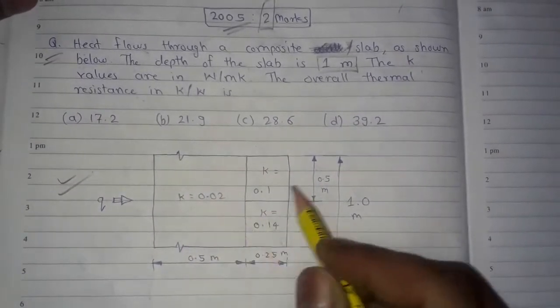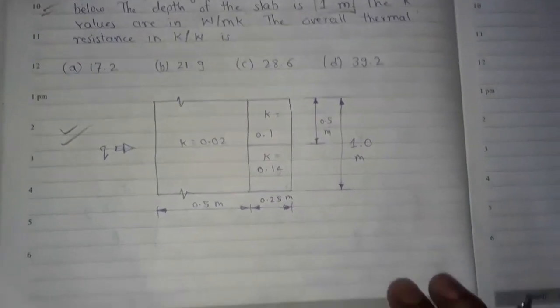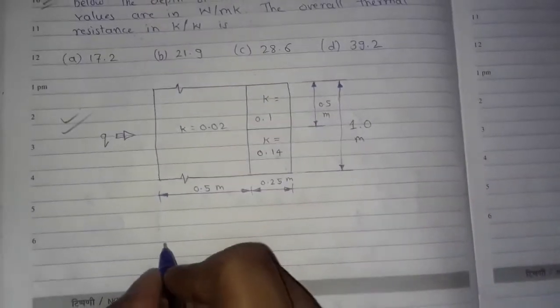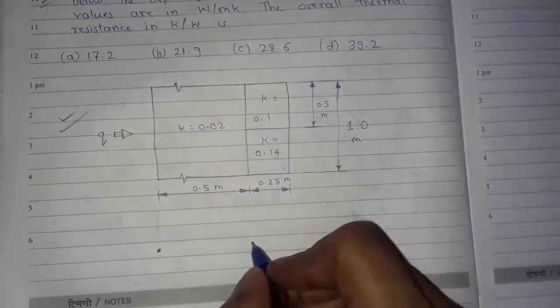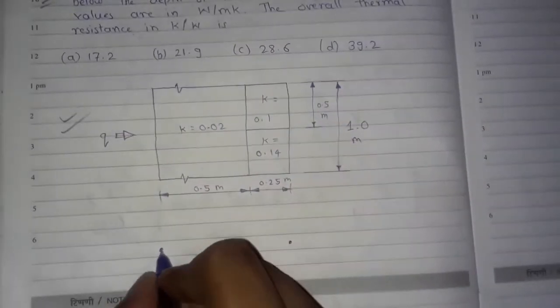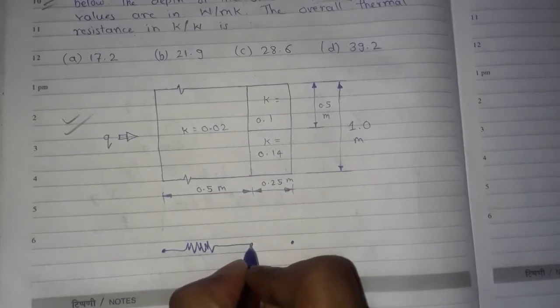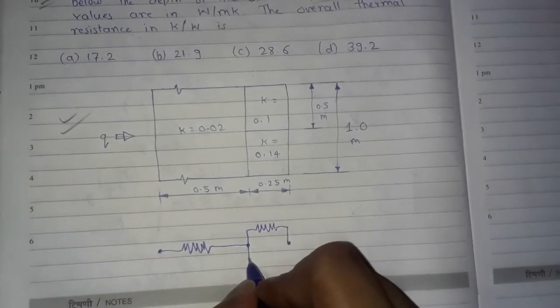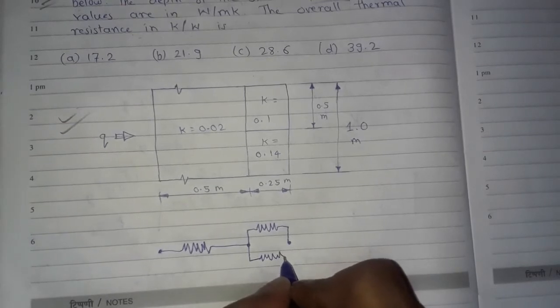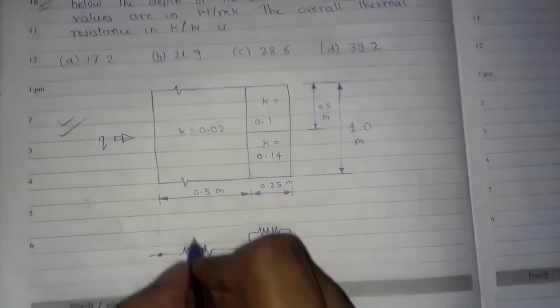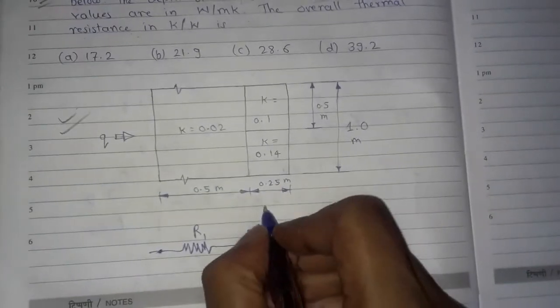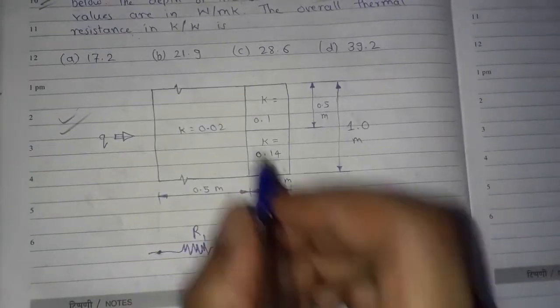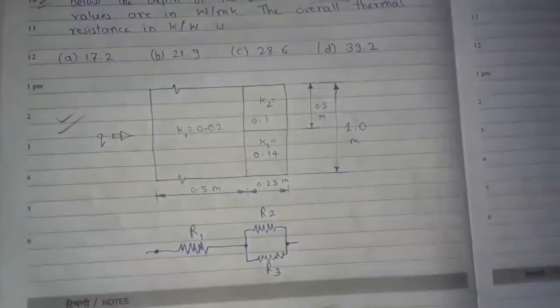This is the diagram which has the given values. We will first draw a thermal resistance diagram for this configuration. We have a first point, a second point, and a third point. For the first portion of the slab we have thermal resistance R1. For the next two portions we have a parallel connection, giving us R2 and R3. We label these as k1, k2, and k3 respectively.